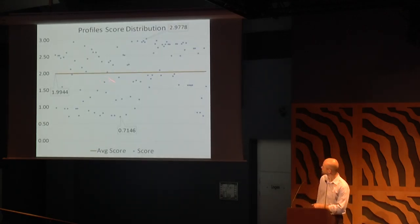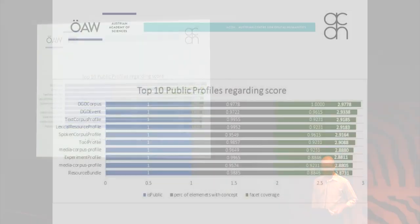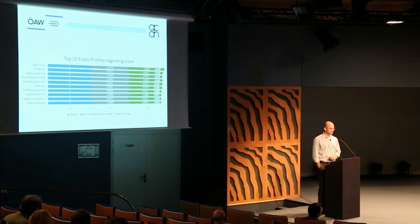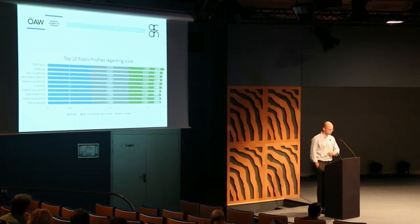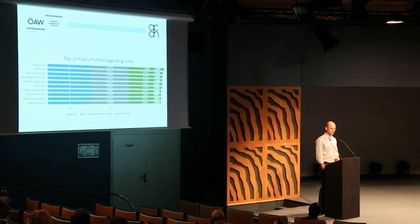Looking in more detail: the top 10 public profiles by score is already a very interesting list for a metadata modeler deciding which profile to use. As a metadata modeler I would go down this list and try to pick the first that fits from a conceptual or thematic point of view — these are the best ones at least regarding the criteria we discussed.